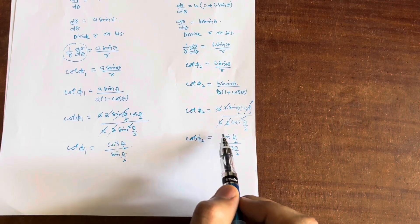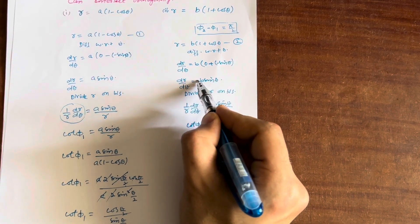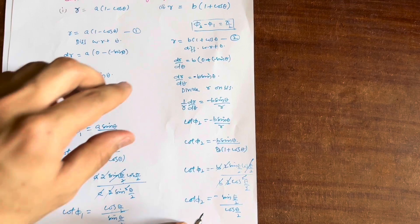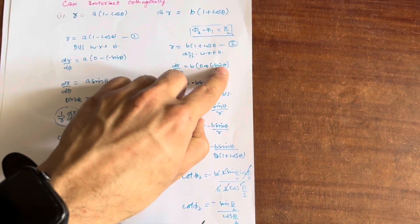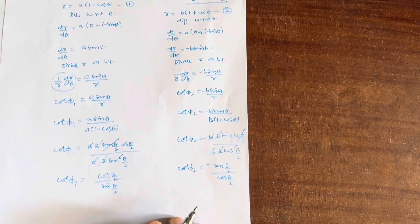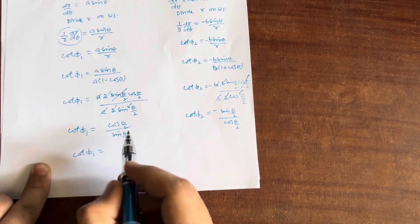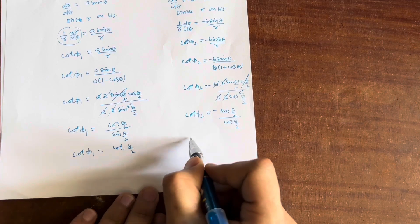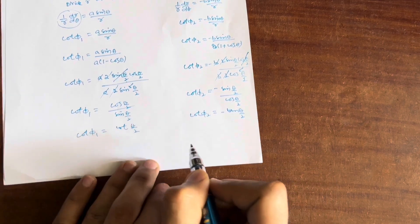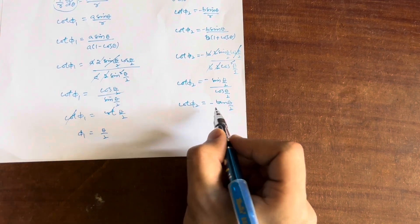Actually, there was a sign error — since the second equation has (1 + cos θ), the differentiation of cos θ gives minus sin θ, so dr/dθ for the second curve should be minus B sin θ. Correcting this, cot φ₂ becomes minus sin(θ/2) divided by cos(θ/2), which is minus tan(θ/2). Now, cot φ₁ equals cos(θ/2)/sin(θ/2) equals cot(θ/2), so φ₁ equals θ/2.